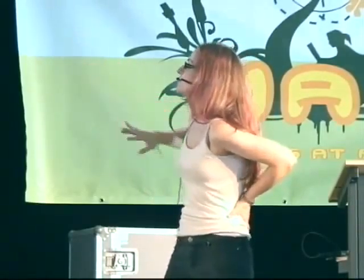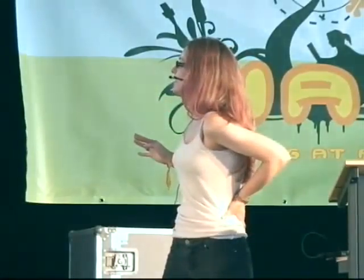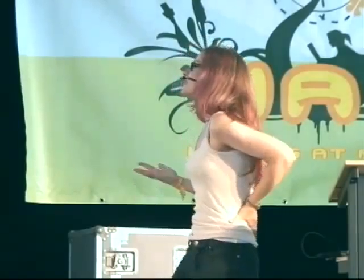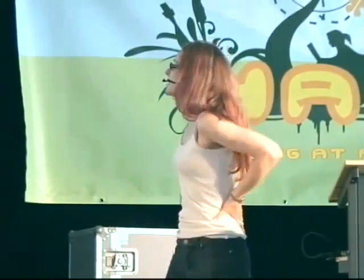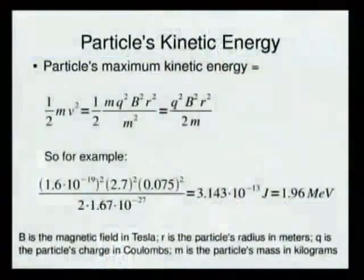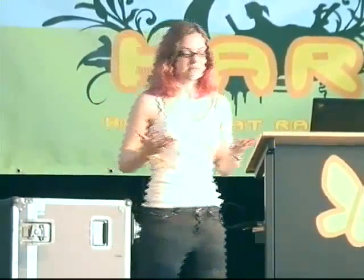For example, for the cyclotron I built — these are not in ideal units, Tesla and Coulombs — you end up getting an energy result in joules and then you convert that to MeV: 1.96 MeV. Around 1 to 3 MeV is standard for this size of cyclotron with the type of magnets you'd be able to build.